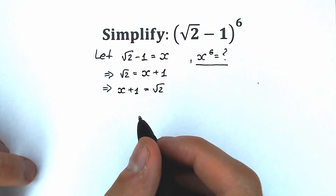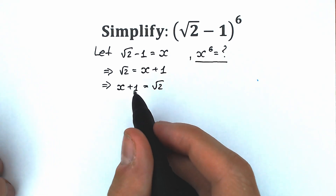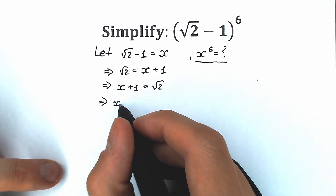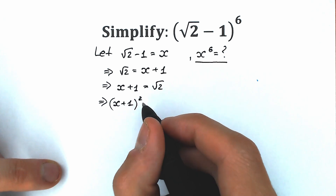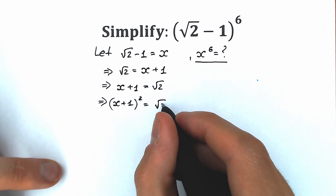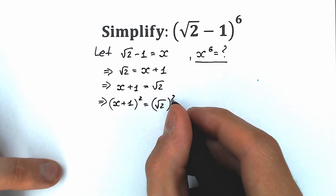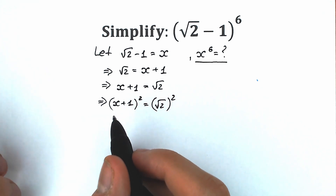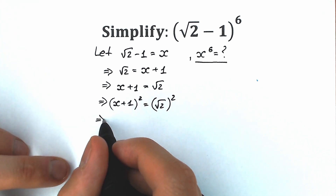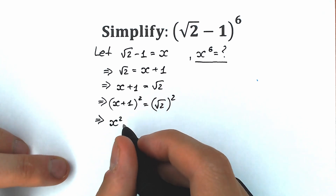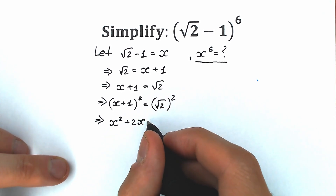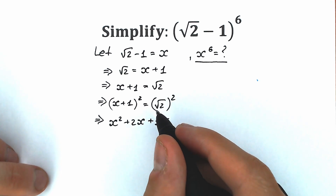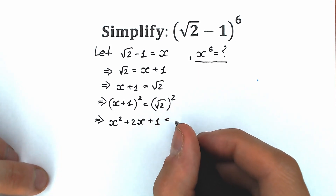Right now let's square both sides. So on the left side we have x plus 1 to the 2nd power, equal to square root of 2 on the right side, which we also raise to the 2nd power. Using the basic school identity, we expand to get x squared plus 2x plus 1, which is equal to square root of 2 to the 2nd power, which equals 2.